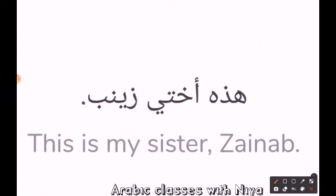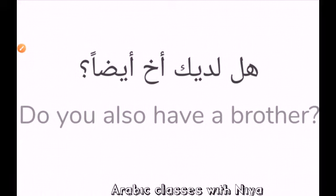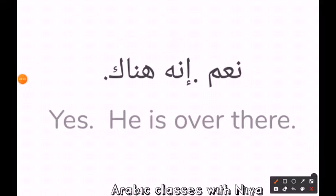Our first sentence is: hadhihi ukhti Zainab — 'This is my sister Zainab.' Our next sentence is: hal ladayka akhun? — 'Do you also have a brother?'